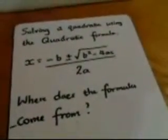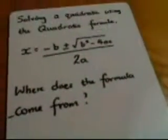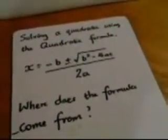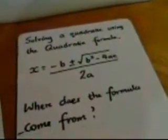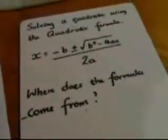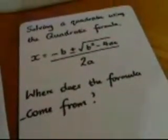By now, you may have come across the formula for solving a quadratic equation. That formula is x equals minus b plus or minus the square root of b squared minus 4ac, all divided by 2a. What we're going to look at in this video is where does this formula come from?